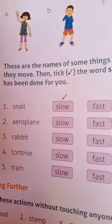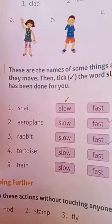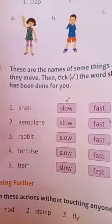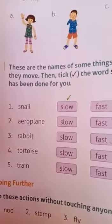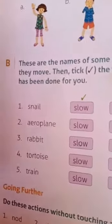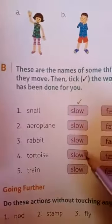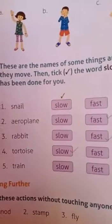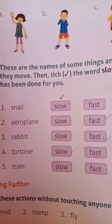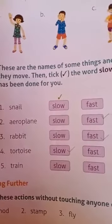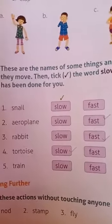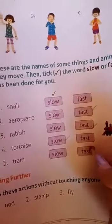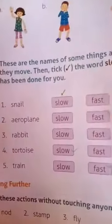Next is tortoise. How does a tortoise move? It moves very slowly. Next is train. How does a train move? Fast. Very good.